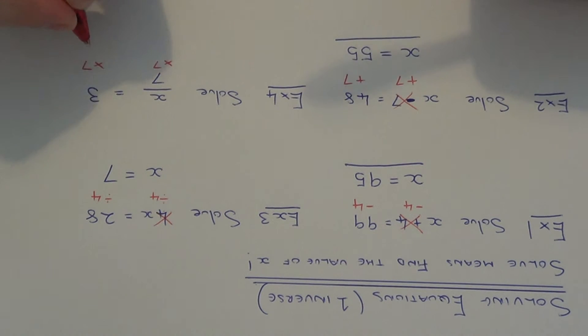So we do this to both sides of the equation. So this will get rid of the 7 off the left hand side and just leave us with x. So work out the right, 3 times 7 is 21.